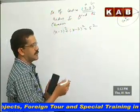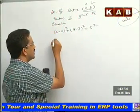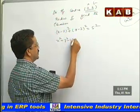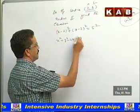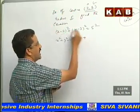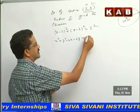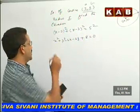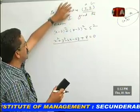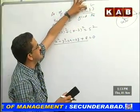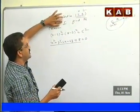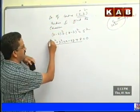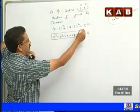The radius is given as 5, so this is the equation of the circle. If you simplify this: x² + y² − 4x − 6y + 4 + 9 − 25 = 0, which gives x² + y² − 4x − 6y − 8 = 0. This is the standard form of the equation of the circle.